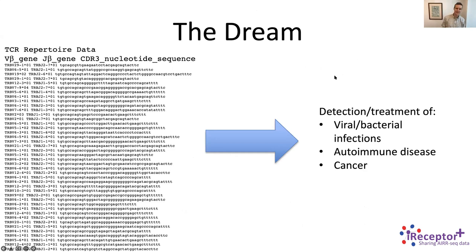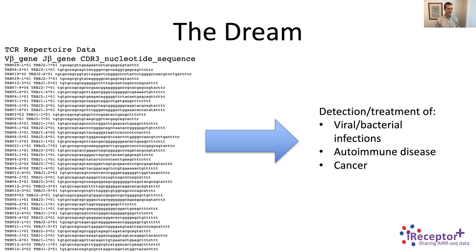The dream that many of us share who think a lot about immune repertoires is that we can interpret the sequences of T cell receptors or B cell receptors, and use that information to detect or aid in treatment of infections, autoimmune disease, or cancer. My training is in math, so what's really appealing to me is this concept of information being encoded — arcane names like TRBV3-1 and TRBJ1-1, and then sequences with patterns that aren't yet clearly related to the functional information embedded in them.